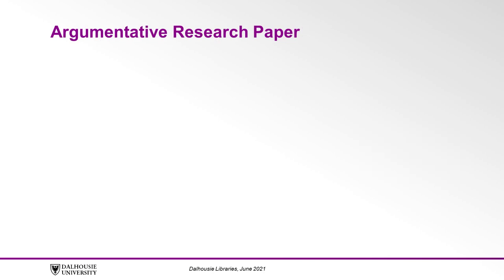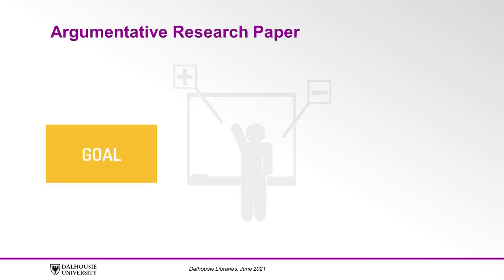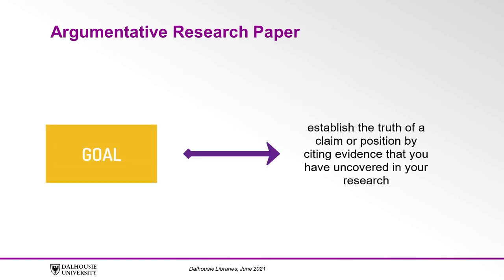The first kind of research paper we'll discuss is the argumentative research paper. As you might guess from the name, an argumentative research paper is a paper that is structured around an argument. The goal of this kind of paper is to establish the truth of a claim or position by citing evidence that you have uncovered in your research.